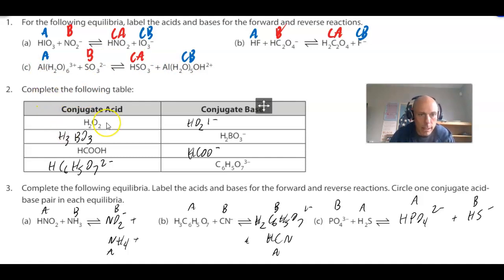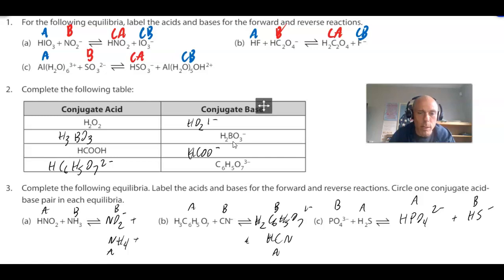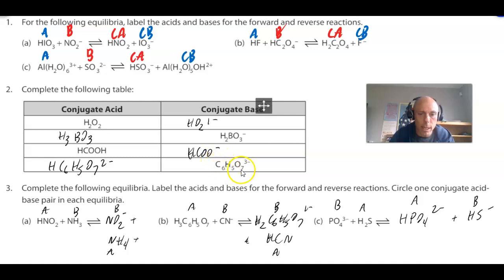For question 2: the acid is H2O2; losing an H+ ion generates HO2⁻ as the conjugate base. H2BO3⁻ acting as a base gains an H+ ion to form H3BO3, neutral. HCOO⁻ — it loses the H+ from the back, generating the acetate ion, HCOO⁻. And lastly, C6H5O7³⁻ — I think that's citrate — when it gains an H+ ion it forms HC6H5O7²⁻, gaining a charge as well.